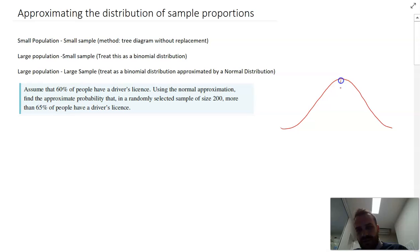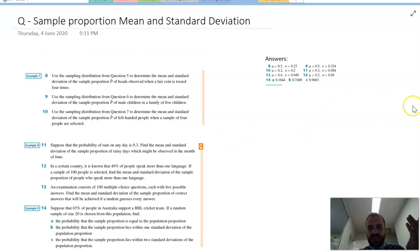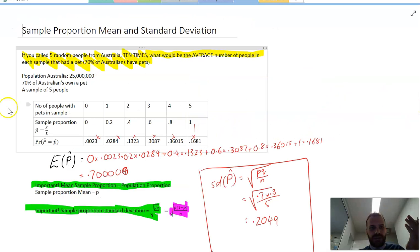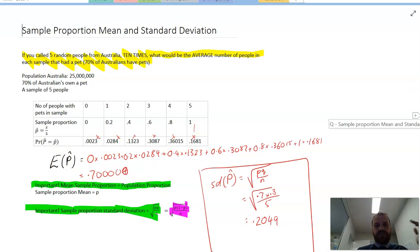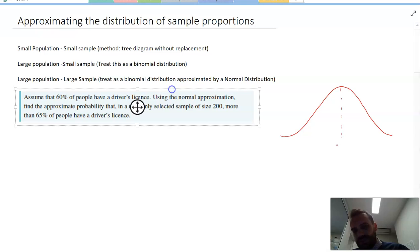Now, what's the mean of our normal distribution going to be? Well, the mean is going to be equal to the population mean, and we've done that before when we've done sample proportions, mean and standard deviations. And so you should remember that the mean of the sample proportion will be equal to the mean of the population, which is 0.6.